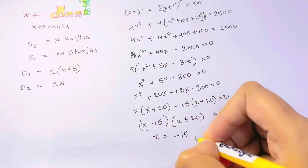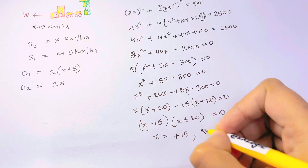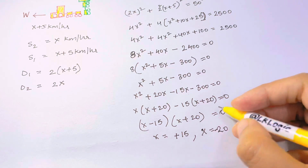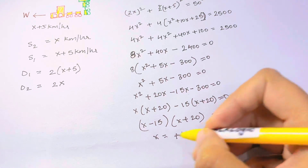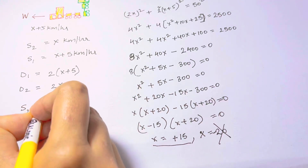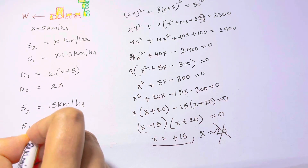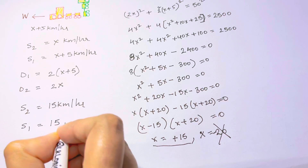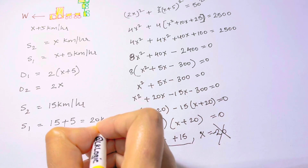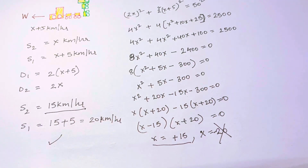So x equals 15 or x equals negative 20. Since speed cannot be negative, x equals 15. The average speed of the second train is 15 kilometers per hour, and the first train is 15 plus 5, which is 20 kilometers per hour.